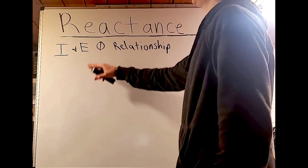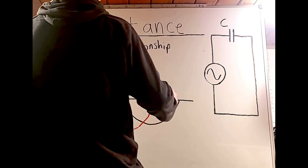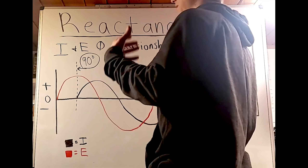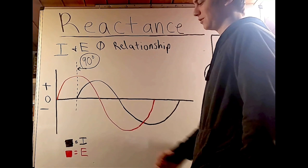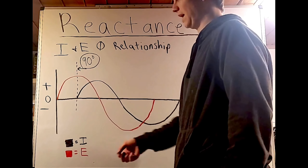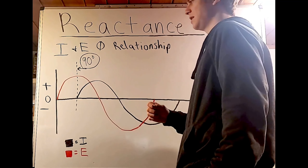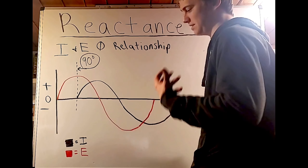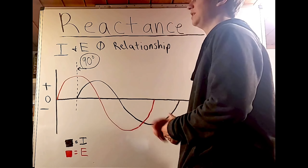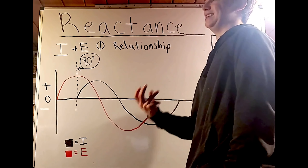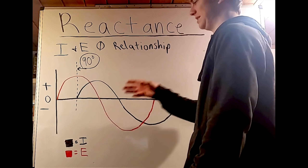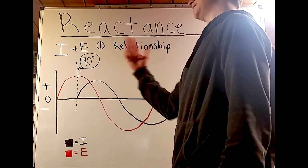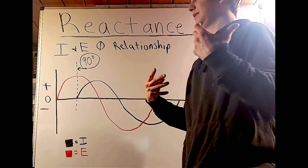Looking at the current and voltage phase relationship for a purely capacitive circuit: it is exactly opposite to a purely inductive circuit. Voltage is red, current is black. Instead of current lagging behind voltage by 90 degrees, current now leads the voltage by 90 degrees. Think: inductance — current lags; capacitance — current leads.